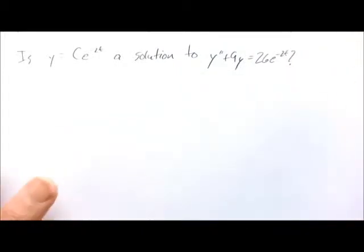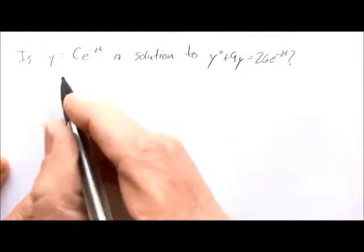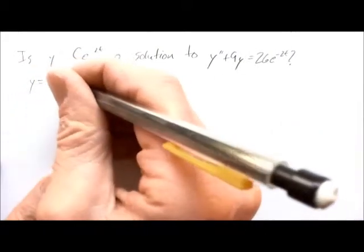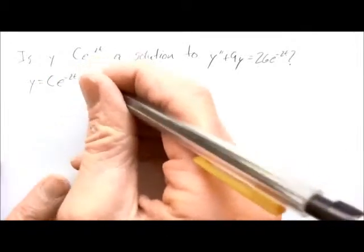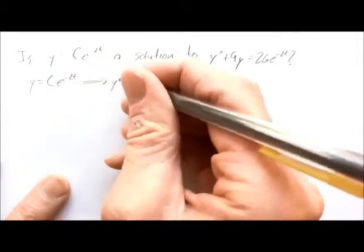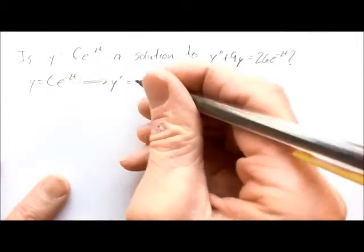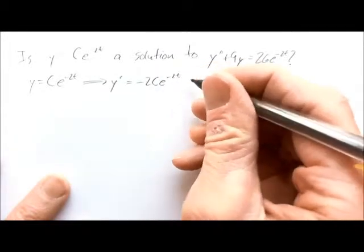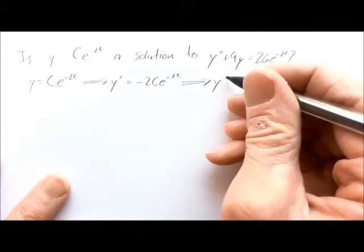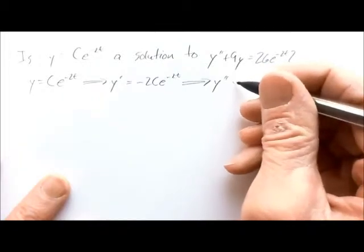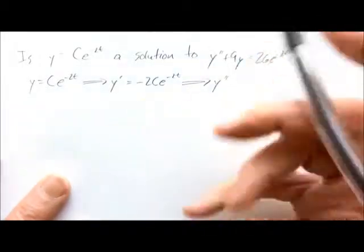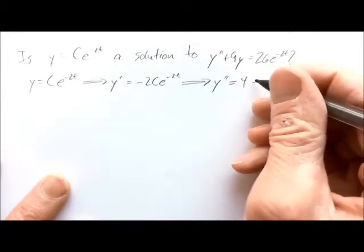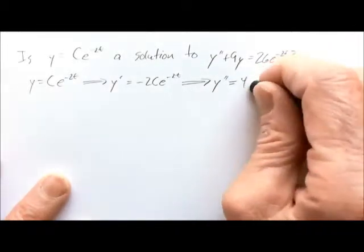We need to calculate some derivatives. If y equals c e to the minus 2t, then the first derivative y prime is negative 2c e to the minus 2t, and the second derivative y double prime equals 4c e to the minus 2t.